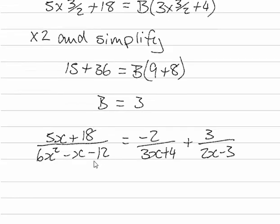Which means that we can write that 5x plus 18 over 6x squared minus x minus 12 is equal to minus 2 over 3x plus 4 plus 3 over 2x minus 3.